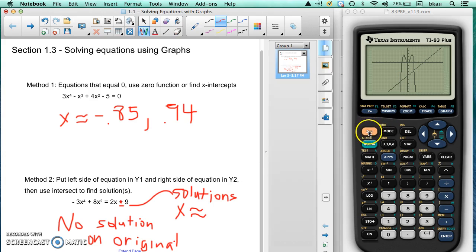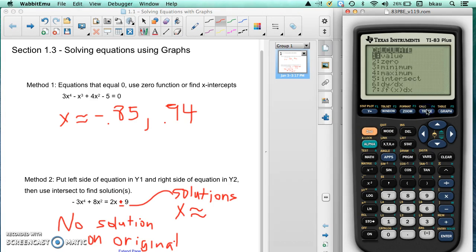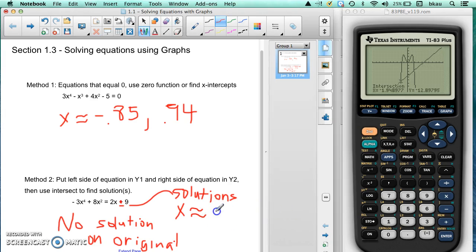So we're going to get two solutions here. We'd hit second calculate. Make sure I'm in the second calculate. Intersect is number five. So we click on number five. First curve, we hit enter. Second curve, we hit enter. So that we select Y1 for the first curve, Y2 for the second curve. We move down to where we think the first intersection is. And we hit enter. So our first value is going to be negative, negative one point nine five. One point nine five is going to be our approximately answer if this was a minus instead of a plus.